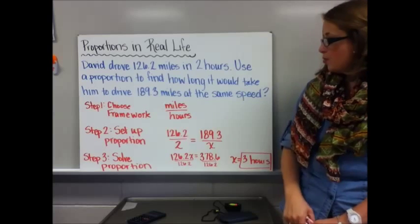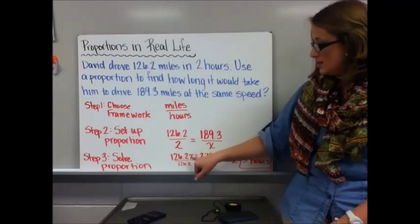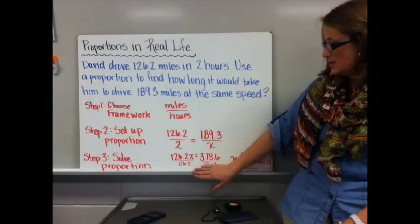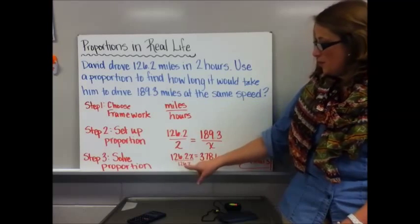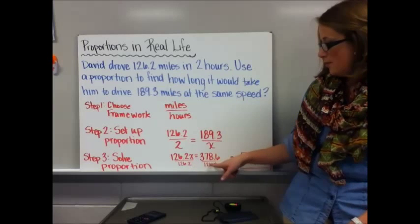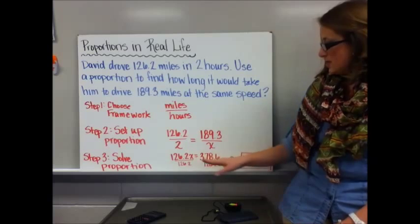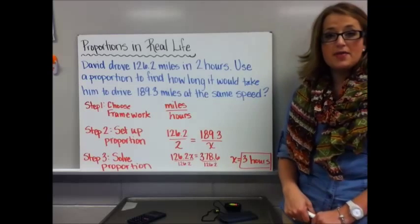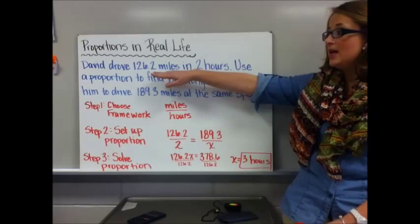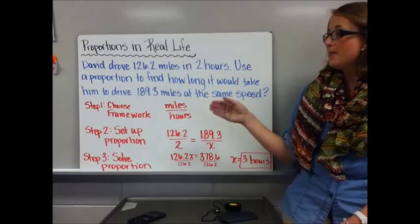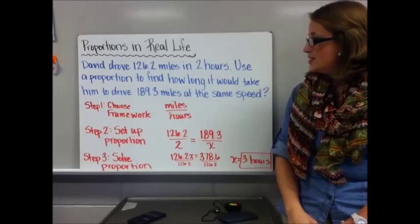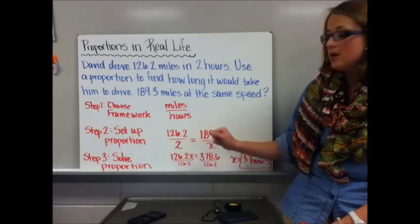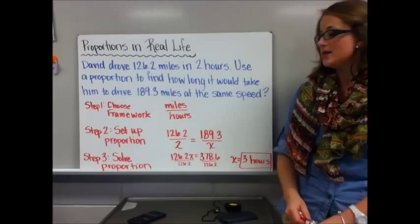Then solve the proportion: cross-multiply to get 126.2x equals 2 times 189.3, which is 378.6. Divide both sides by 126.2 and x equals 3 hours. You may have found his speed first — 126.2 divided by 2 is 63.1 — then multiplied by 3. That also works; it's essentially doing cross products.